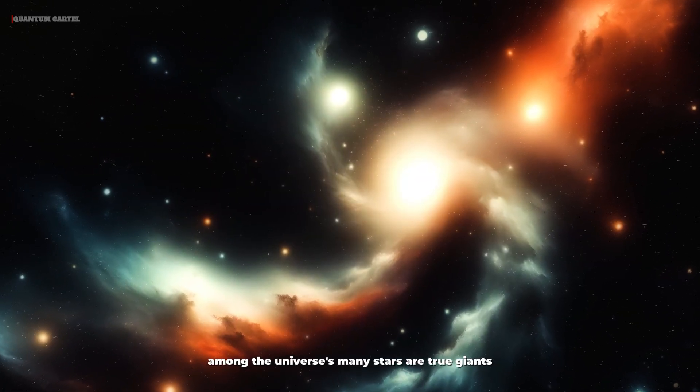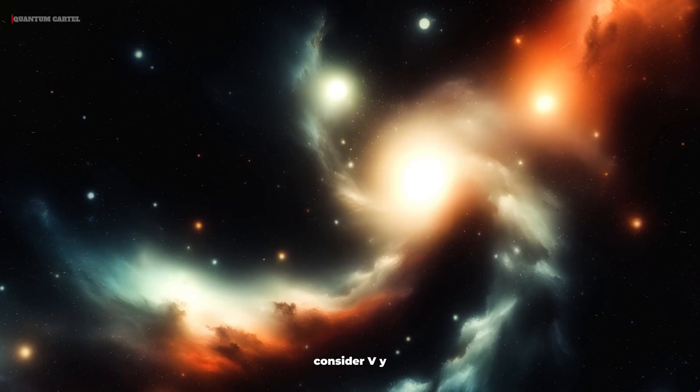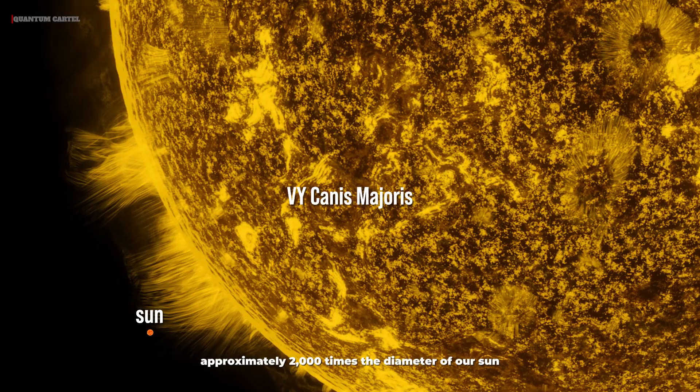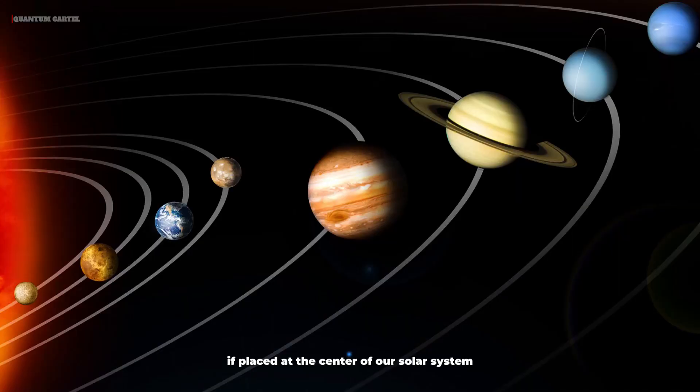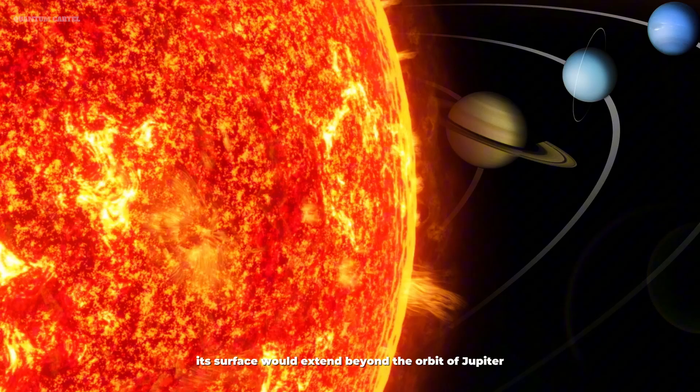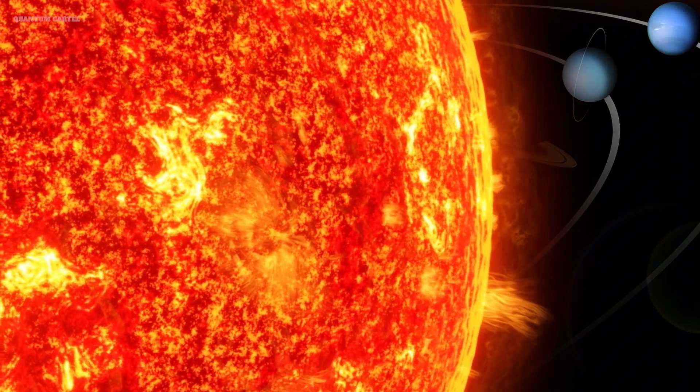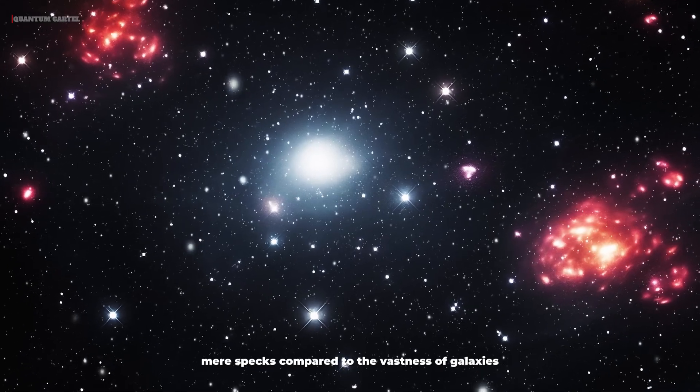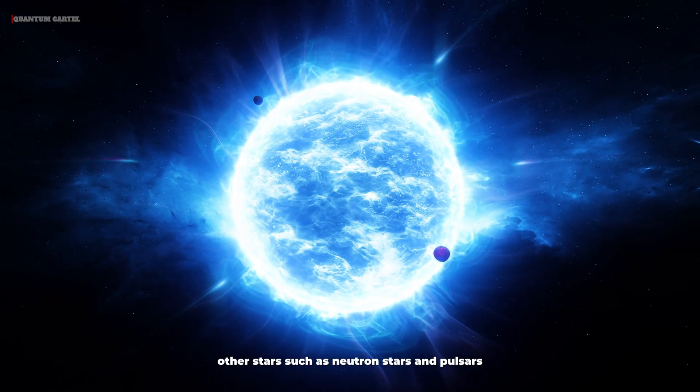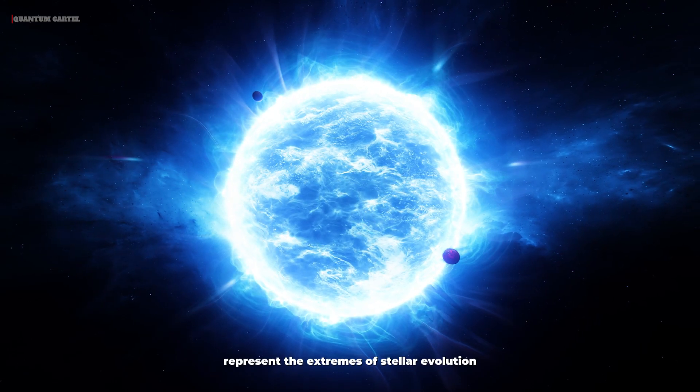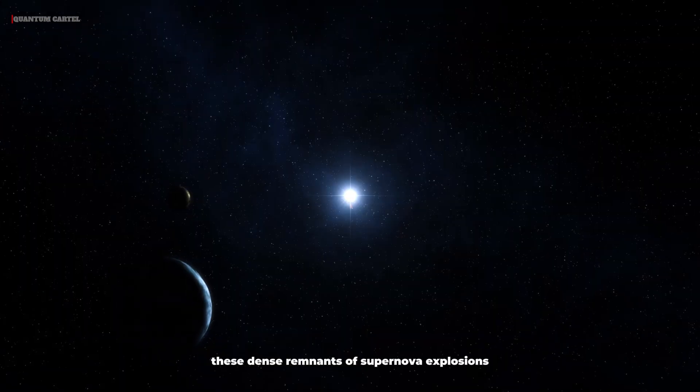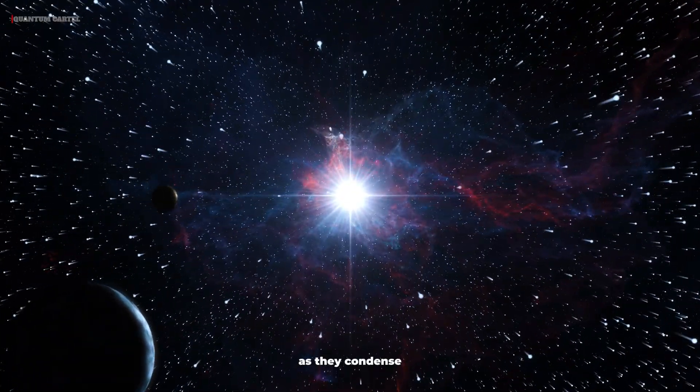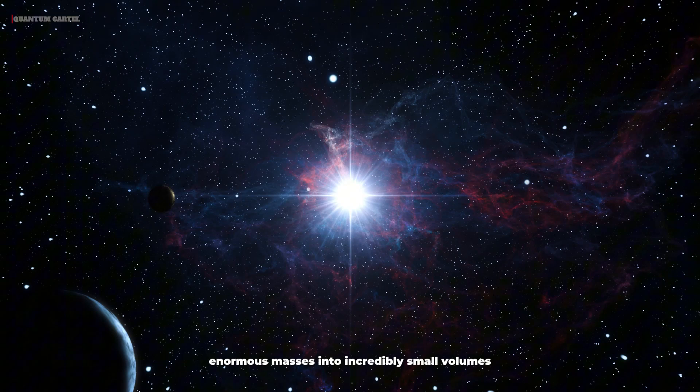Among the universe's many stars are true giants. Consider VY Canis Majoris, a hypergiant star approximately 2,000 times the diameter of our Sun. If placed at the center of our solar system, its surface would extend beyond the orbit of Jupiter. Yet even stars like this are mere specks compared to the vastness of galaxies. Other stars, such as neutron stars and pulsars, represent the extremes of stellar evolution. These dense remnants of supernova explosions challenge our understanding of physics, as they condense enormous masses into incredibly small volumes.